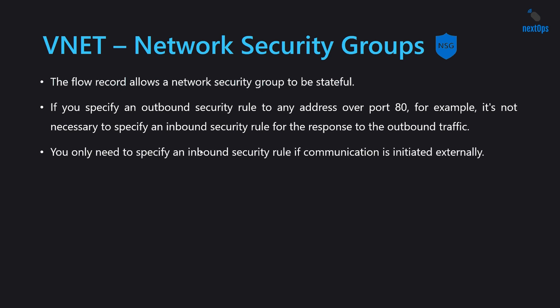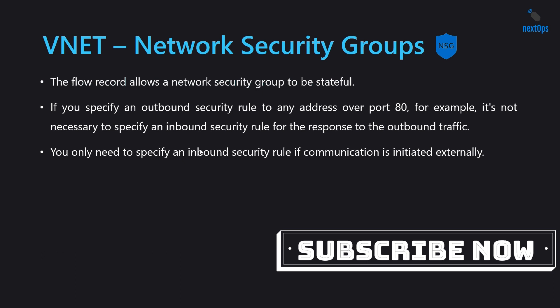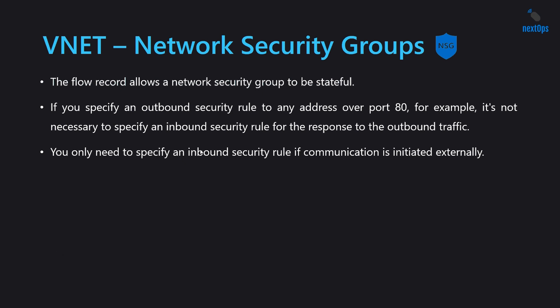You only need to specify an inbound security rule if communication is initiated externally. For example, you have a virtual machine and you hosted a website on top of it — a business-centric website that needs to be open to your customers. People from external networks like the internet should be able to access the website. In such cases, you need to allow inbound traffic to your virtual machine on port 80 or 443, and we need to create inbound security rules when communication is initiated externally.